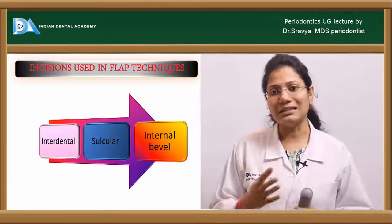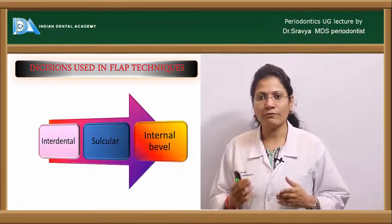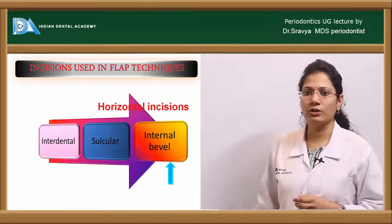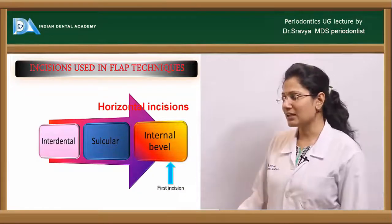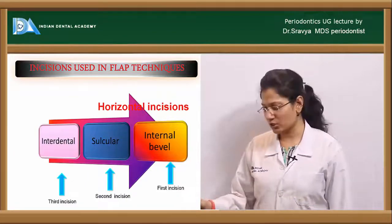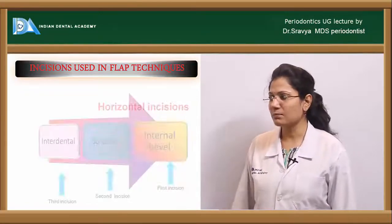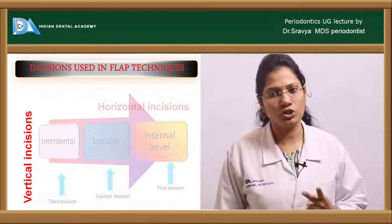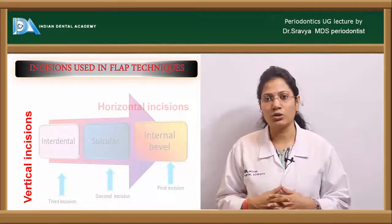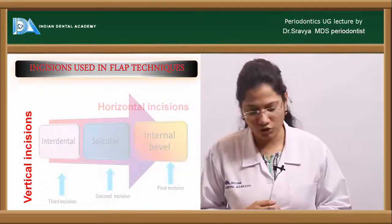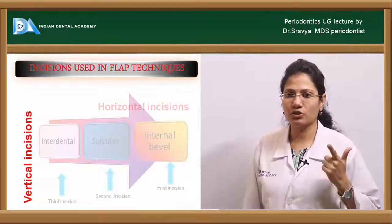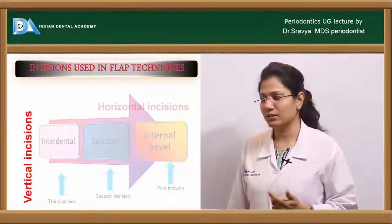Now let us see what incisions are needed to carry out flap surgical procedures. There are two types: horizontal incisions and vertical incisions. Under horizontal incisions, you have the first incision — the internal bevel incision — the second being the sulcular incision, and the third being the interdental incision. The internal bevel is the first incision, followed by the crevicular or sulcular incision as the second, and the interdental incision as the third.